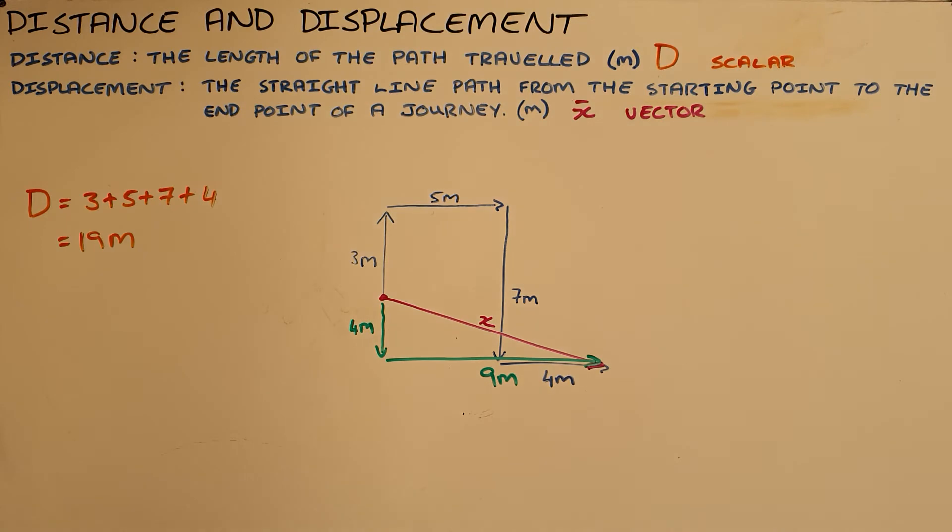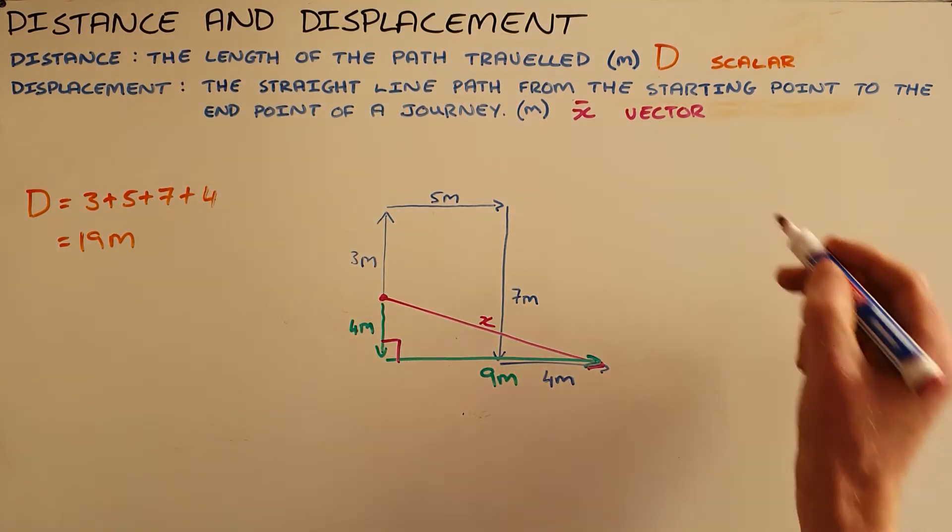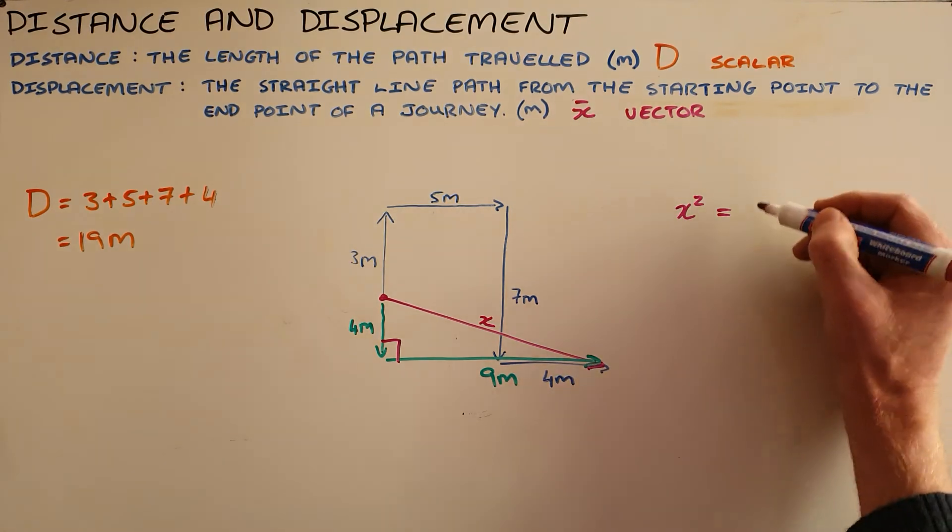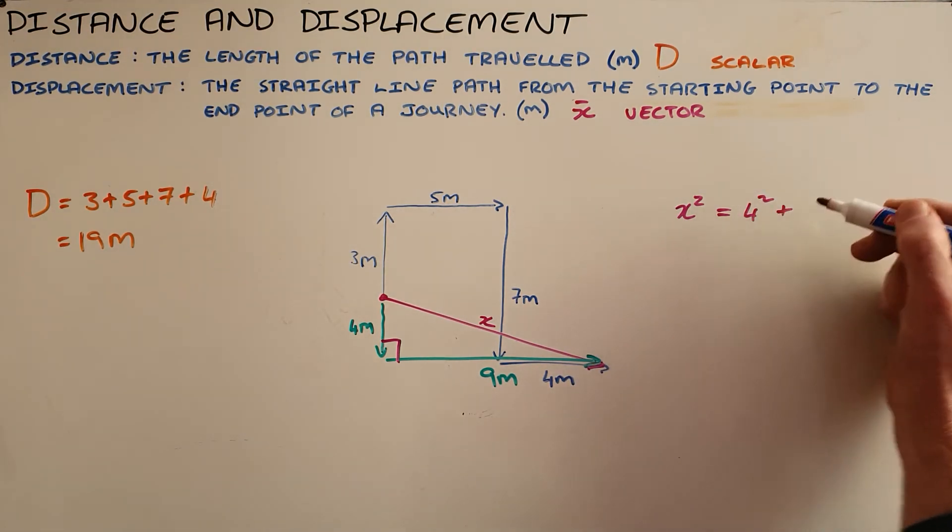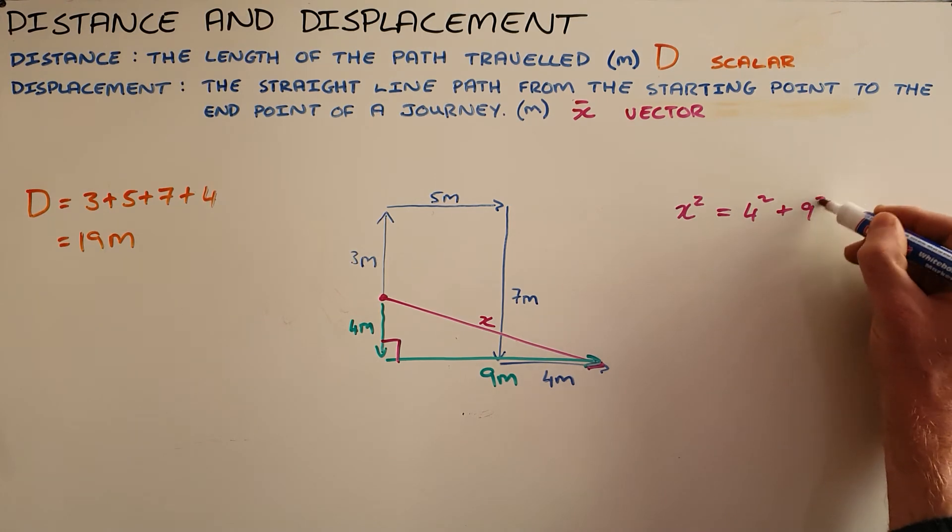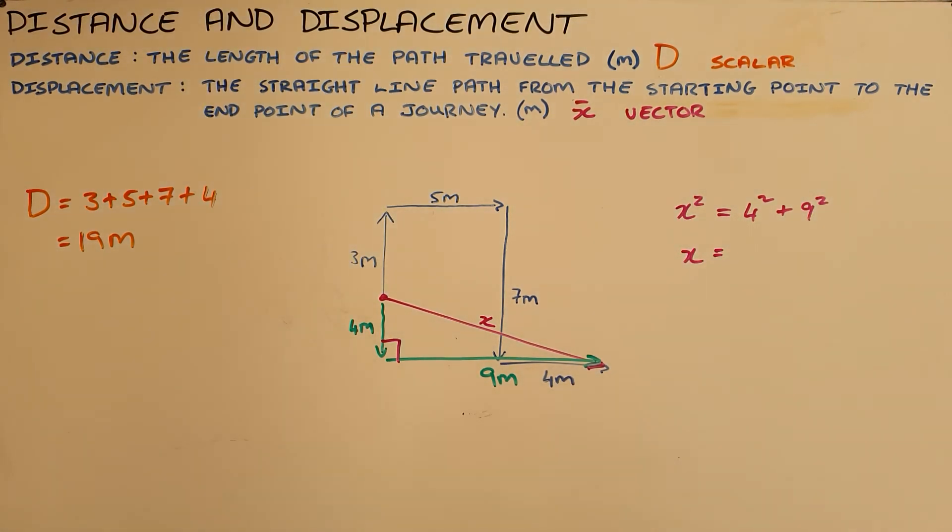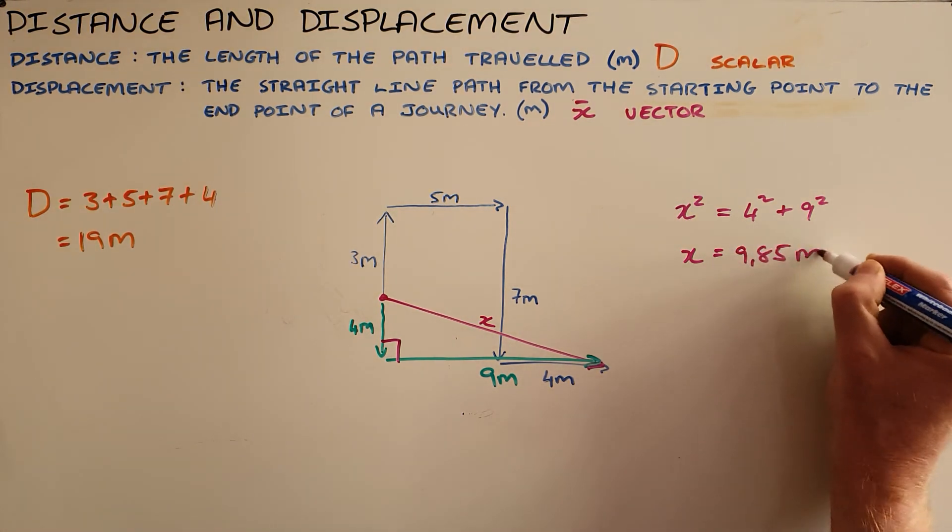We can then calculate the displacement of this object using Pythagoras. This being a right-angled triangle, our displacement squared, the hypotenuse of that triangle, is equal to the square root of both of these sides, which means we can solve to find that the displacement of this object would be 9.85 meters.